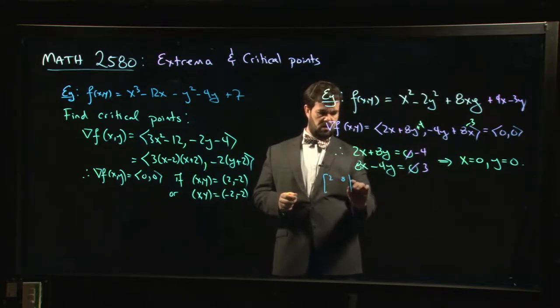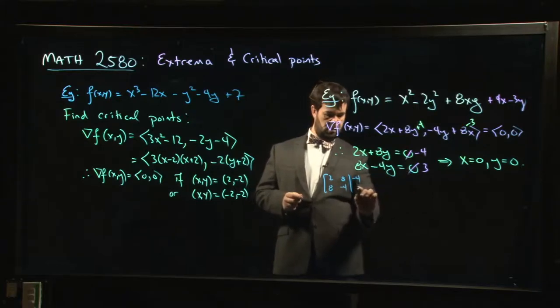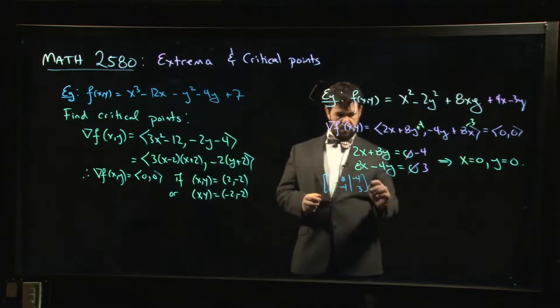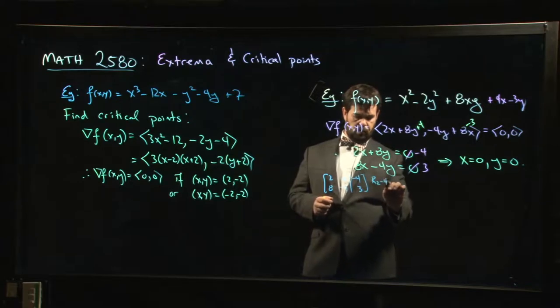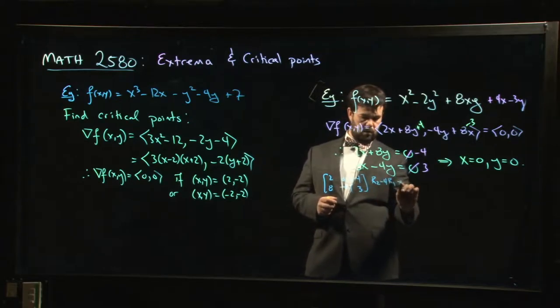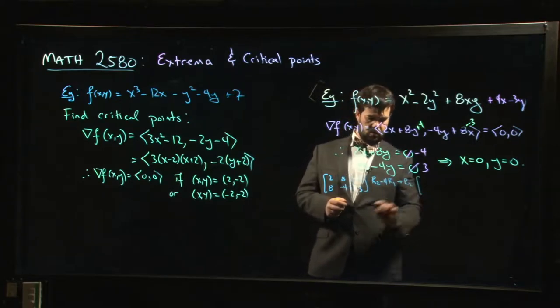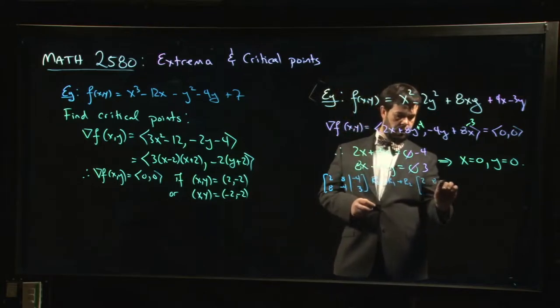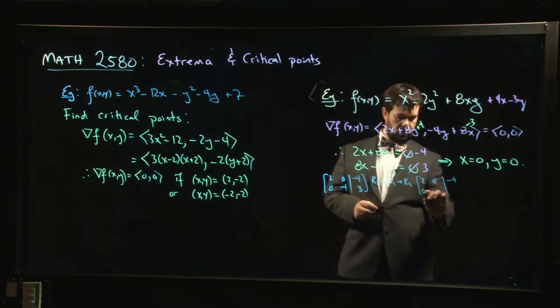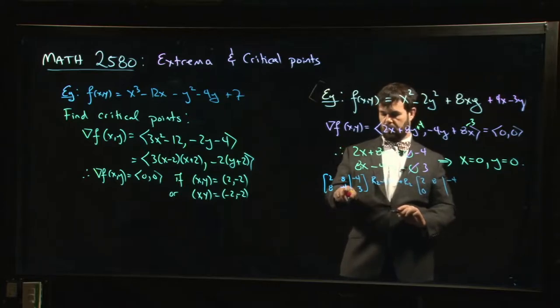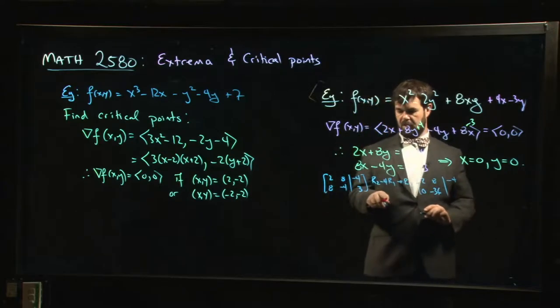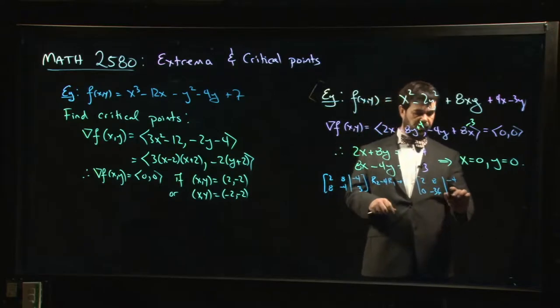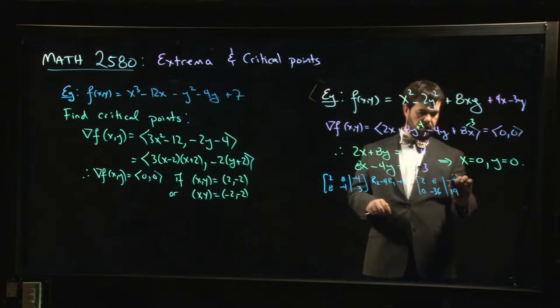2, 8, -4. 8, -4, 3. So let's do row 2 minus 4 times row 1, put that into row 2. I'm going to get 2, 8, -4. 0, -4, -32 more, so -36. And then 3 plus 16 is 19.